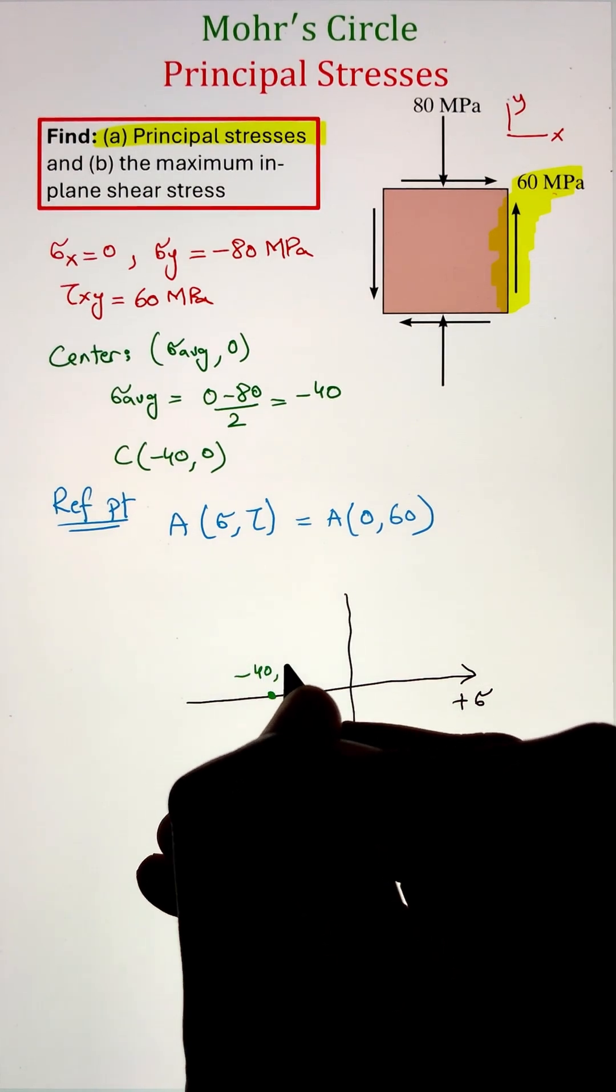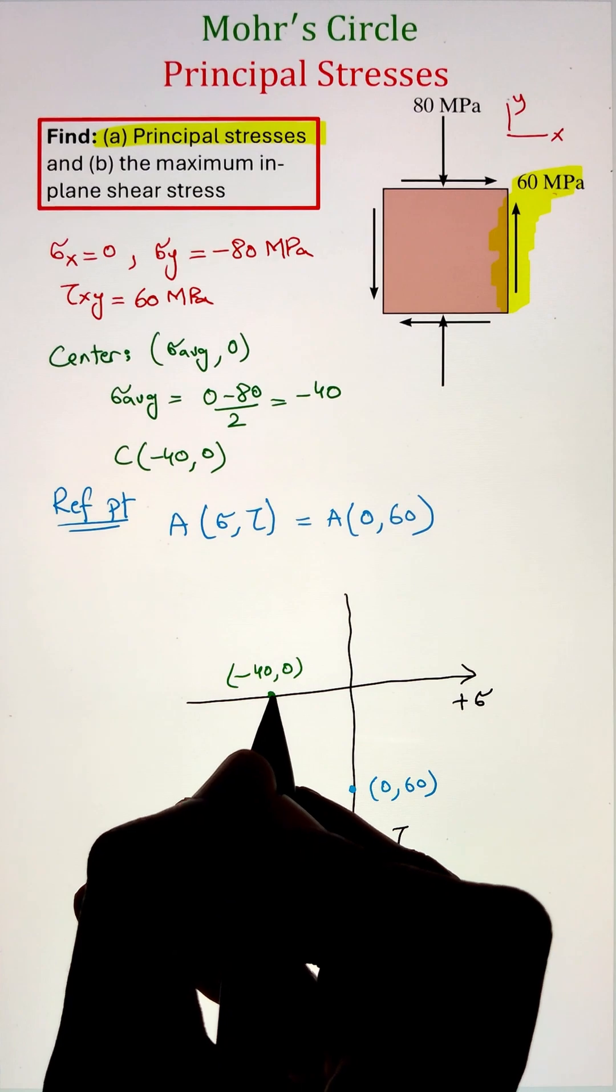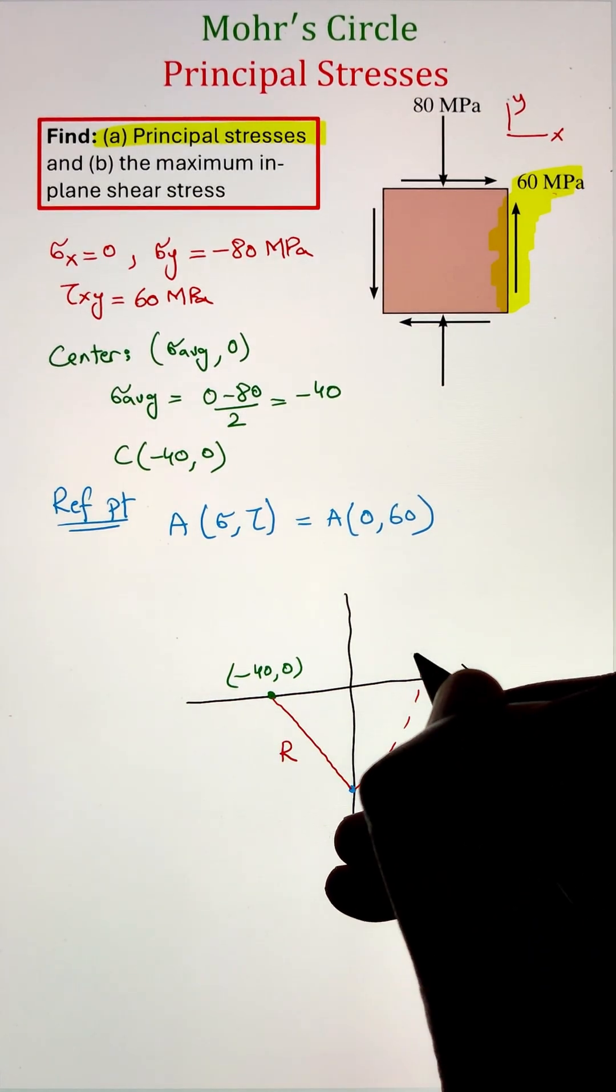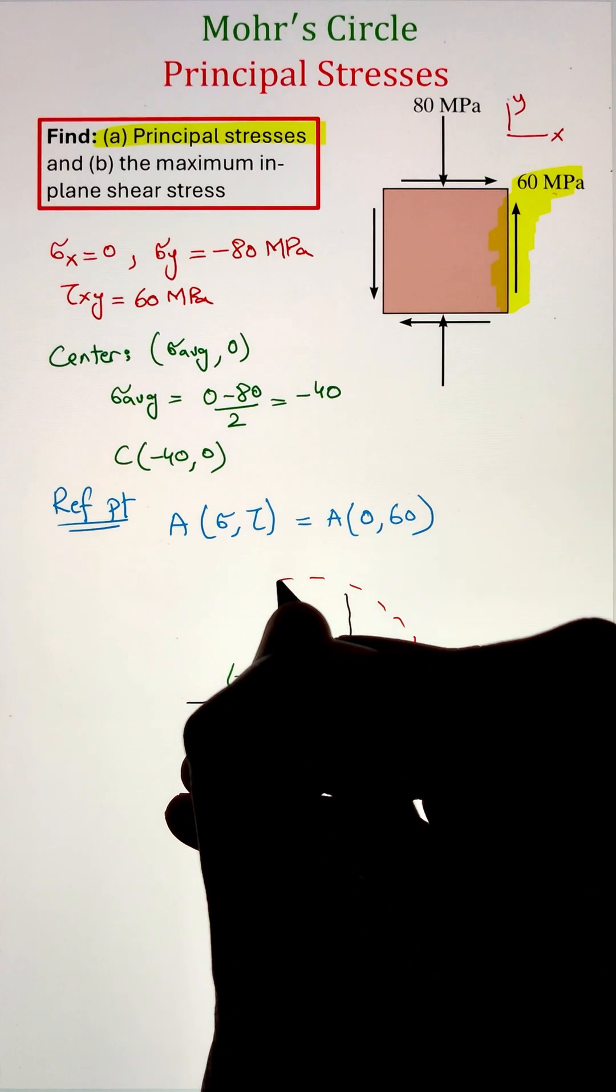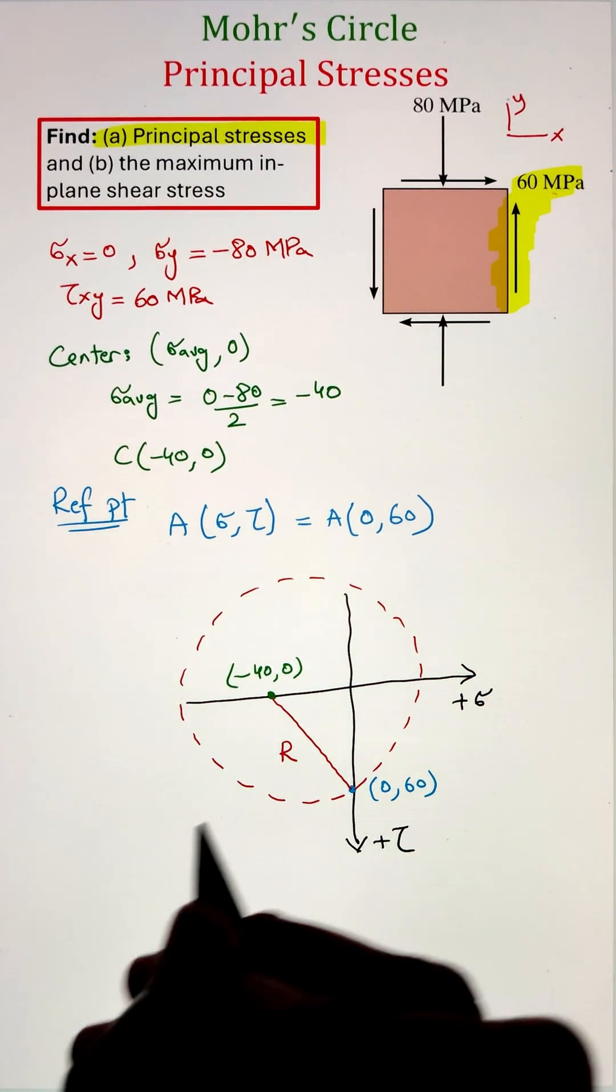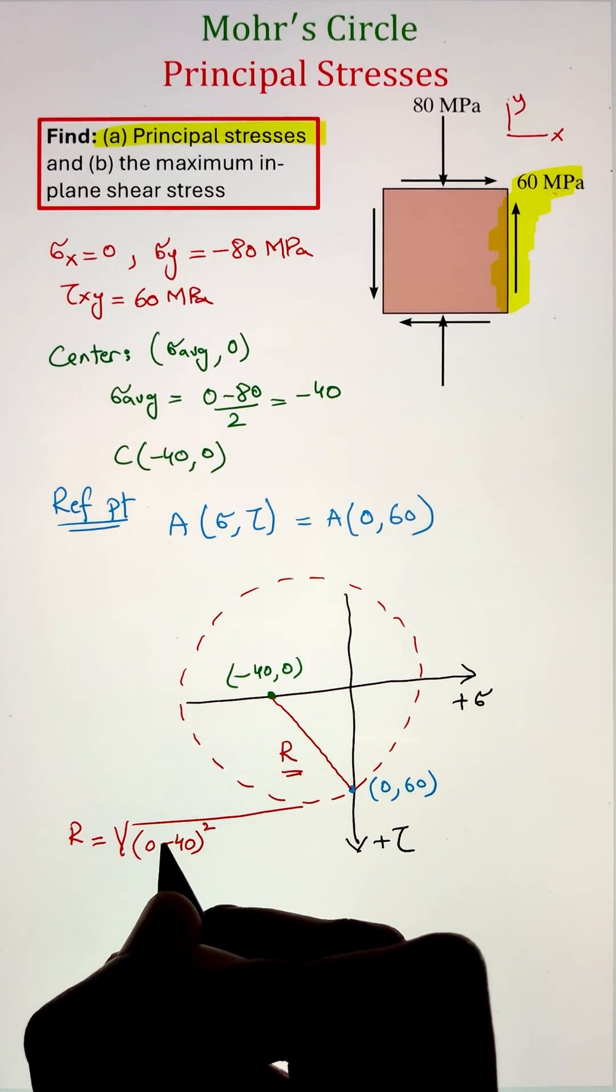Afterwards, we can identify a reference point and pick any one of the sides of the square. In this case, I have picked the right-hand side where the shear stress is 60 megapascal and the normal stress is 0. Therefore, the point coordinates of point A will be 0,60. Once we have these two points, we can go ahead and plot on our axis of normal and shear stresses.